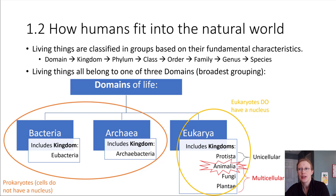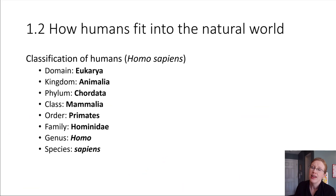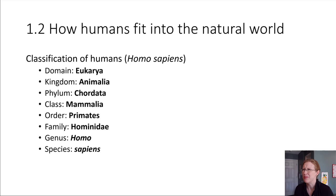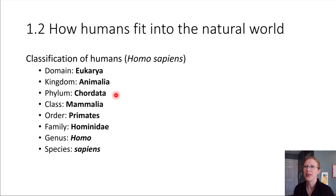Humans belong to the phylum chordata — referring to animals that have a neural cord down the spinal column. Next, humans belong in the grouping of mammals. We have hair and mammary glands for producing milk for babies, which defines the class we belong to. The order we belong to is the primates, which includes humans but also lemurs, monkeys, and apes.